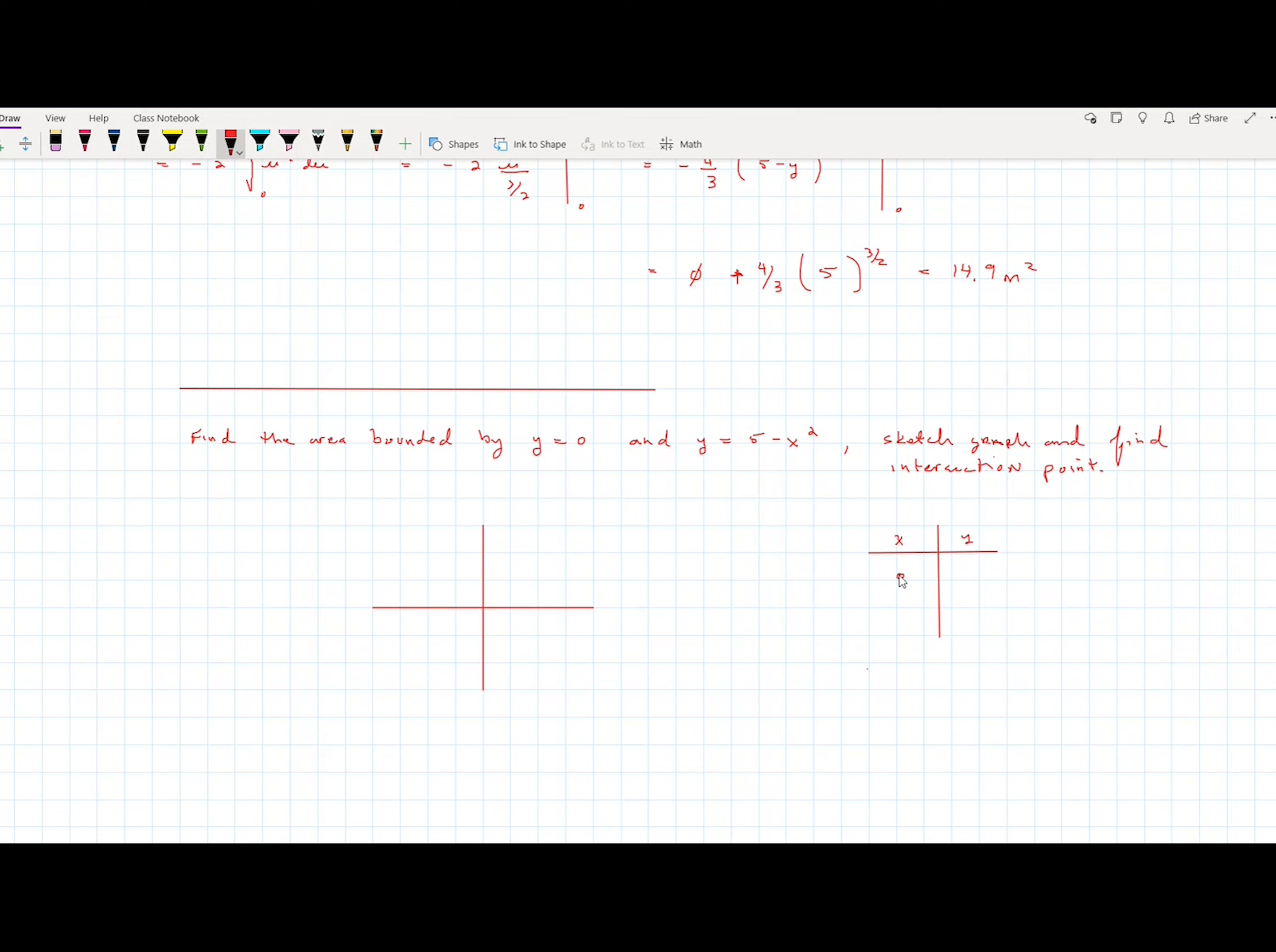And so you say, okay, what happens when x is 0? When x is 0, you see that y is 5. And then you say, okay, what happens when x is 1? When x is 1, you see that y would be 4. You say, well, when x is negative 1, it's the same thing because it's squared, so it's also 4.